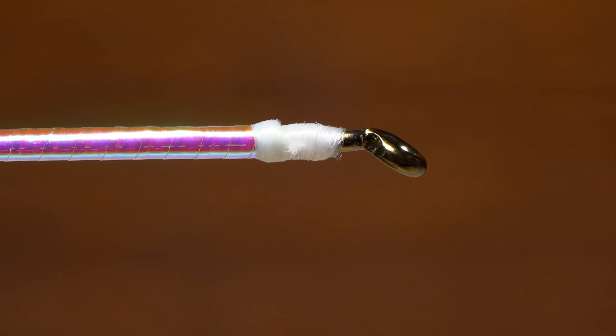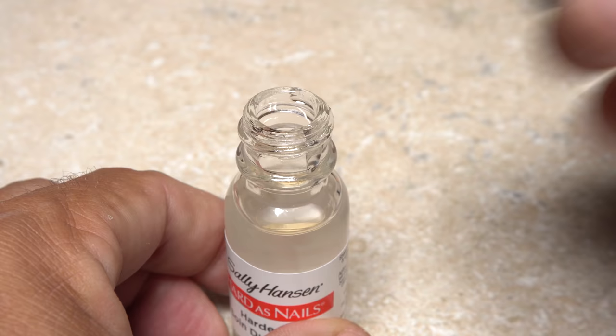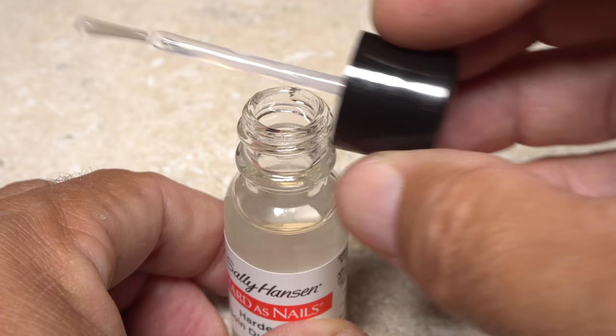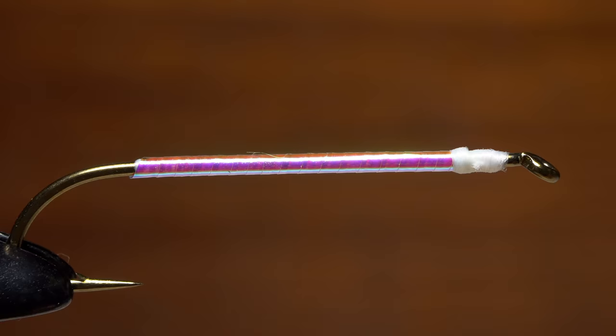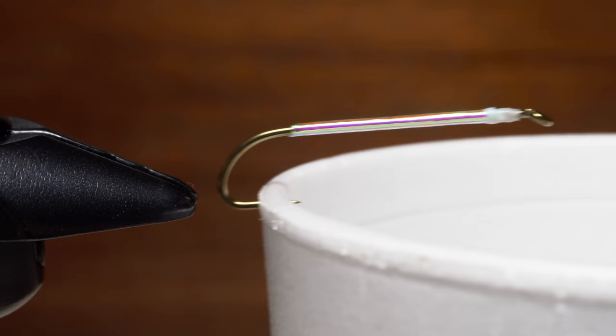The white underbody really makes the tinsel pop. I like to use clear Sally Hansen hard as nails to reinforce the body of the fly. Just make sure to wipe nearly all of the liquid from the entire brush before applying it to the wraps. You really only need the smallest amount. Here again, a rotary vise makes applying a thin, even coat an absolute breeze. You do need to set the fly aside to allow the Sally Hansen's to dry completely.